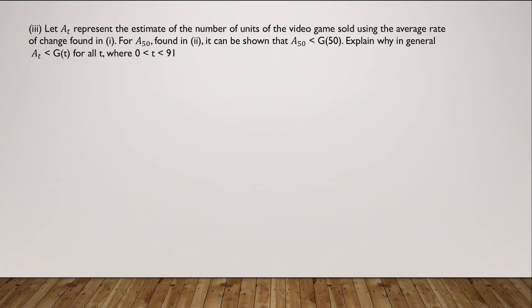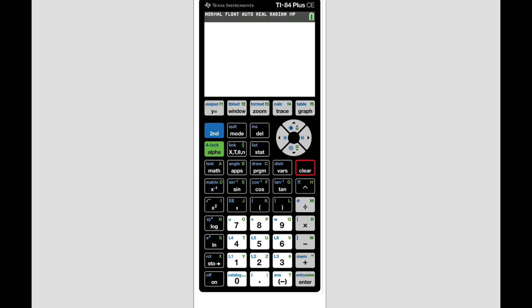Now the third and final part is: let A(t) represent the estimate of the number of units sold using the average rate of change found in part 1. For A(50) found in part 2, it can be shown that A(50) is less than the actual value, which is G(50). Explain why in general A(t) is less than G(t) for all t in the interval 0 to 91. Now whenever you get this question, I want you to immediately open the calculator. Once you open the calculator, I want you to go to the top left button, which is the graphing one, and you will input your function, which is a plus b times ln(t plus 1). You will put in the values of a and b, which we already know: 40 and 7.961. Accurate to three digits is more than enough. Three decimal places is more than enough. You put in times ln(x plus 1).